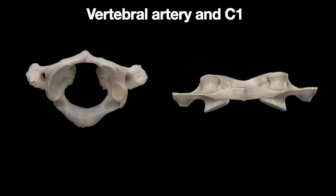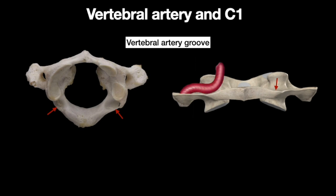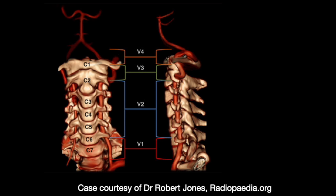One of the most important structures that runs near C1 is the vertebral artery. Knowing its relation is crucial when exposing C1 surgically. The vertebral artery, after exiting the C1 transverse foramen, runs on the top of C1 laterally in a groove called the vertebral artery groove. The vertebral artery is typically divided into four segments. V1, also known as the pre-foraminal segment, is the vertebral artery from its origin to the transverse foramen of C6.